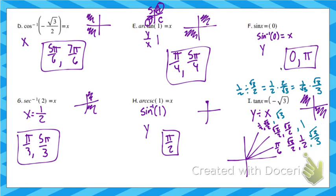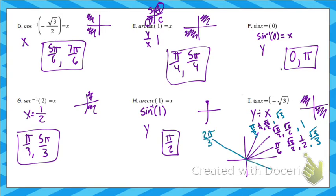So those tangent values — root 3 over 3, 1, and root 3 — come from y divided by x. For example, 1/2 divided by root 3 over 2: you flip the second fraction, then rationalize, and that gives you that value. If you get in the habit of remembering these, it might make questions a little bit faster. You can always divide to find it, but at this point hopefully you know the unit circle pretty well.